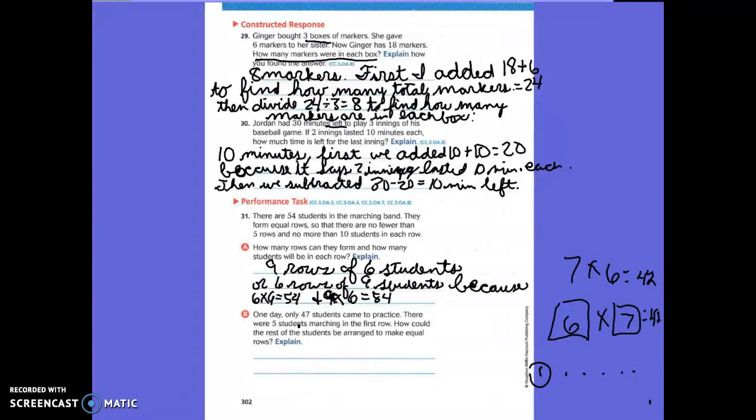We said one day 47 students came to practice and there were 5 students marching in the first row. That first row is not going to be equal to all of them. So what did we say we were going to do with the 5 students? Subtract. So first subtract. What are we subtracting? 47 minus 5 equals 42.